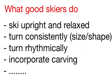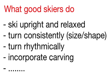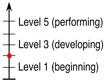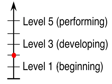Here is what good skiers do: they ski upright and relaxed, they turn consistently in size and shape, they turn rhythmically, and they incorporate carving. Then my ski coach went ahead and measured my performance. He pulled out a rubric that measured me on each of the important dimensions and rated me as a level 2 skier. Quite honestly, when I looked at his rubric, I thought I was more like a level 1.5.